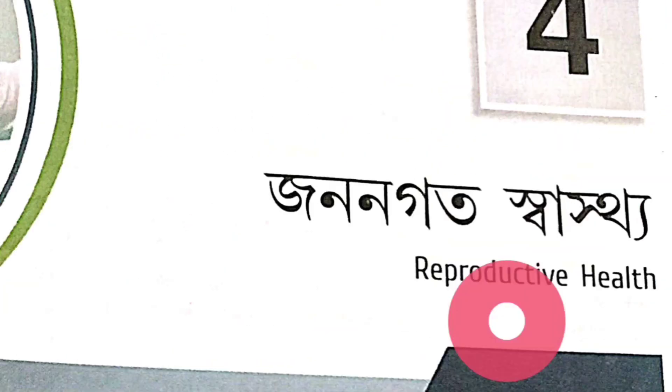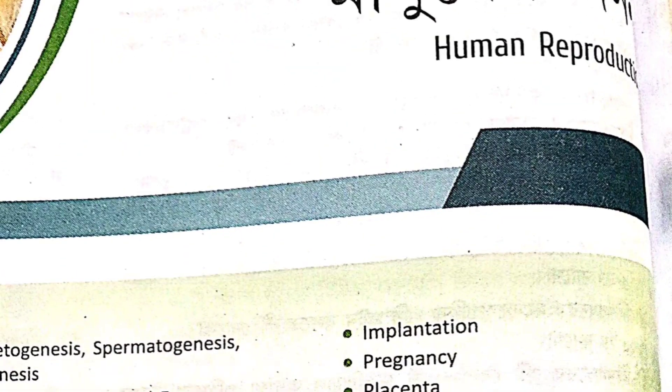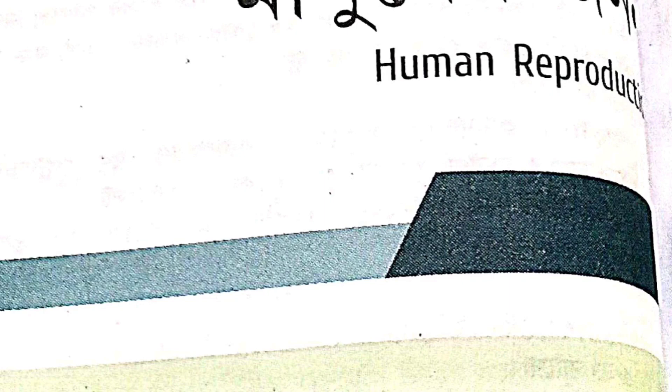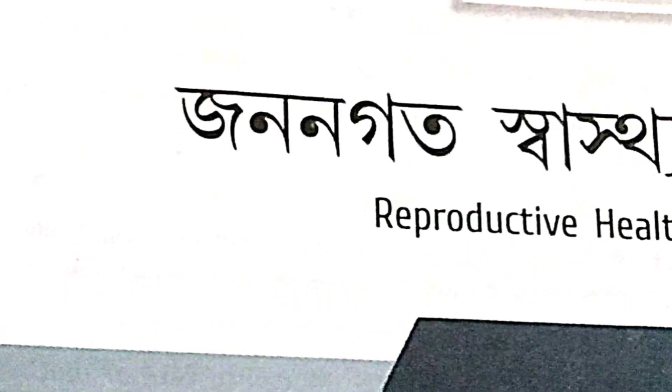Then chapter number two: Sexual Reproduction in Flowering Plants. Next, chapter number three: Human Reproduction. Next, chapter number four - and then unit one: Sexual Reproduction in Flowering Plants, Human Reproduction, Reproductive Health. So unit one has: chapter one - Reproduction in Organisms, chapter two - Sexual Reproduction in Flowering Plants, chapter three - Human Reproduction, chapter four - Reproductive Health.